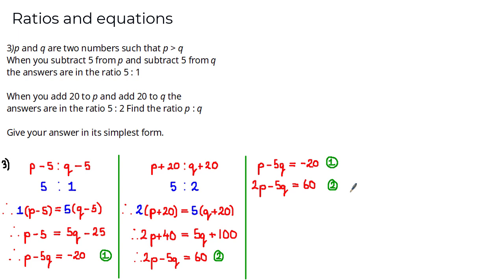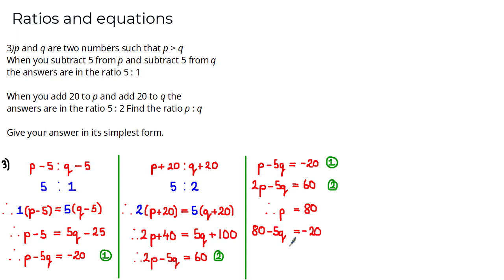Writing both equations together, we use the elimination method. Doing Equation 2 minus Equation 1: (2p − p) = p, (−5q − (−5q)) = 0 eliminating q, and 60 − (−20) = 80, so p = 80. Substituting p = 80 into Equation 1: 80 − 5q = −20, so 5q = 100, giving q = 20.